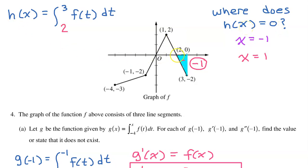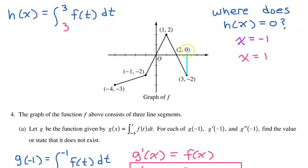Moving on to an x value of 2, there is no more positive signed area left, so it seems there won't be any more values of x giving net area of 0. However, what if we let x equal 3 itself? Now we're talking about the area from 3 to 3 — we didn't even move. It's just a line, so there is no space and no area. So x equals 3 is another value at which h of x equals 0.